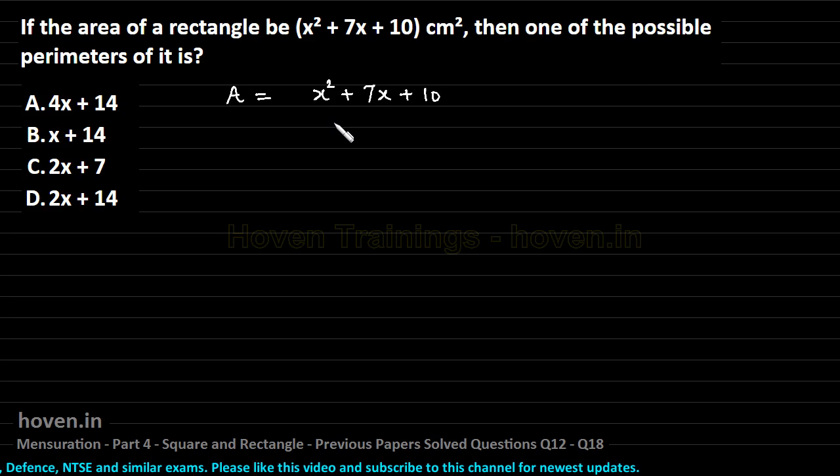This means if we see this area should be expressed as a product of two linear factors, and once we are able to factorize this we will have the length and breadth and from there we can add them to obtain our perimeter. Now, the first job is about factorization of this one.